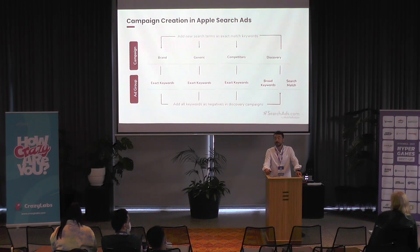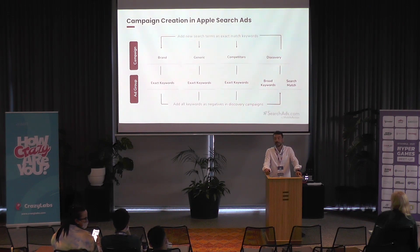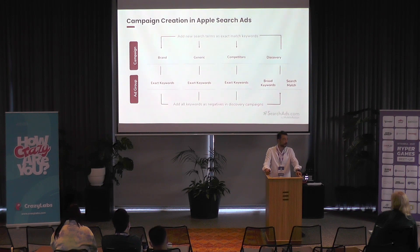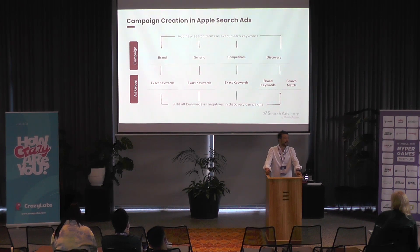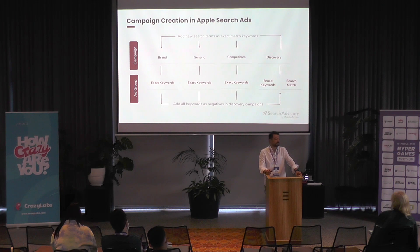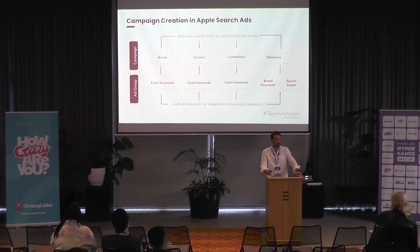For brand campaigns, we use Exact Match. The second campaign is competitor-based — others are trying to win your traffic by bidding your brand keyword, so we do the same to acquire relevant users. For generic keywords, people search for things like 'heel games,' 'woman games,' or 'makeup games' — they already have intent for your genre, so you can capture them by bidding the right keywords. The last campaign type is discovery, which is an algorithm provided by Apple. You essentially say: 'Apple, show my app wherever you think it's relevant.' Apple then shows your app for relevant keyword searches, generating quality users at quite low prices.